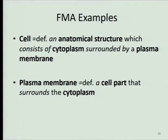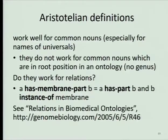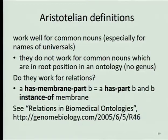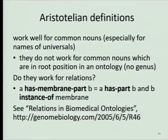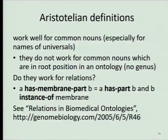All of this works well for common nouns and noun phrases of the sort you use in science, like 'plasma membrane' or 'cell.' It doesn't work so well for relations. So 'has membrane part,' which is a relation introduced for other purposes, can be defined as a kind of Aristotelian specification of 'has part' — namely, 'has membrane part' is a kind of 'has part' which involves an instance of membrane as the part term. It's less elegant and also less generalizable. It's not a recipe that works as easily when we're dealing with nouns and noun phrases. You can see the summary of all of this here.